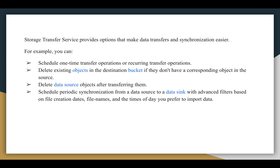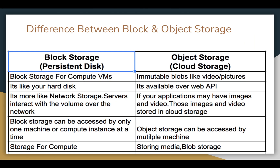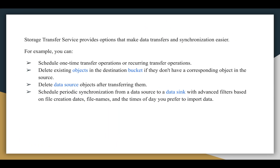Storage Transfer Service provides options that make data transfers and synchronization easier. For example, you can schedule one-time or recurring transfer operations, delete existing objects in the destination bucket if they don't have a corresponding object in the source, delete data source objects after transferring them, and sync with advanced filters based on file creation dates, file names, and preferred times of day to import data.